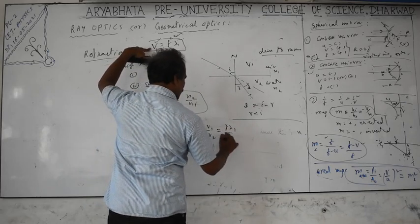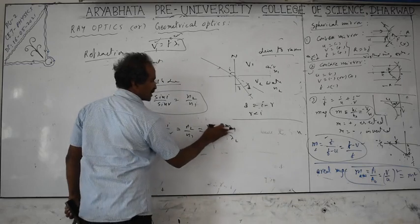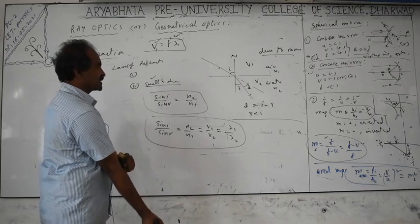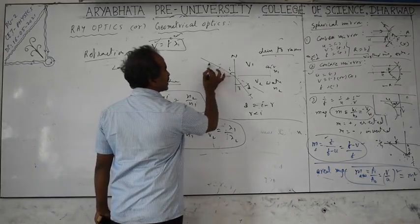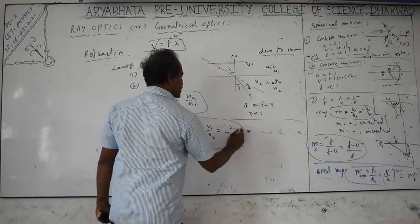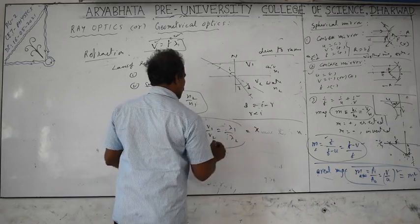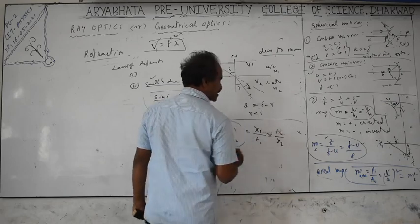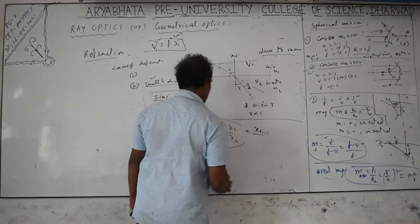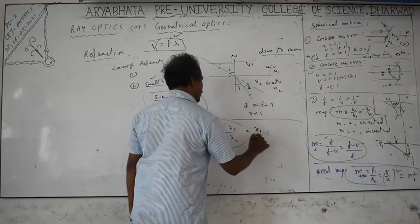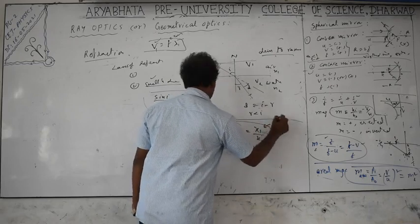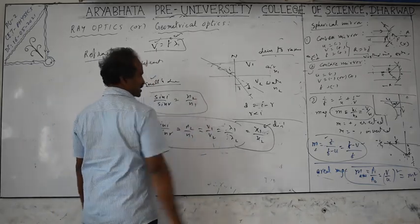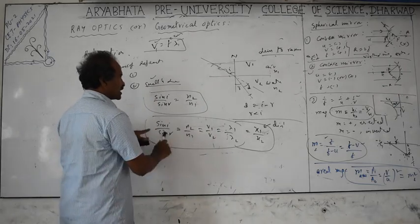Since v1 = f·λ1 and v2 = f·λ2 and frequency is the same, you can cancel f, giving v1/v2 = λ1/λ2. Velocity also equals distance divided by time: if a slab of thickness x is given and same time t is considered, v1 = x1/t and v2 = x2/t. This gives the ratio of distances traveled by waves in the same time. Sometimes problems ask how many wave cycles fit inside a medium — this will be discussed during problem-solving.